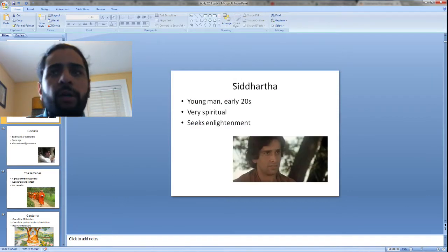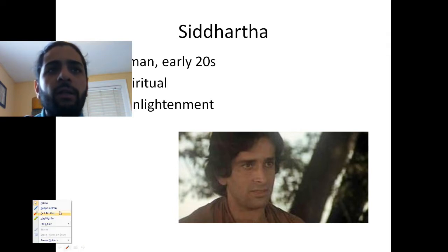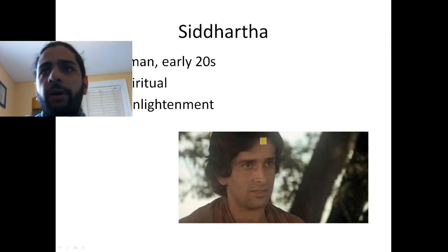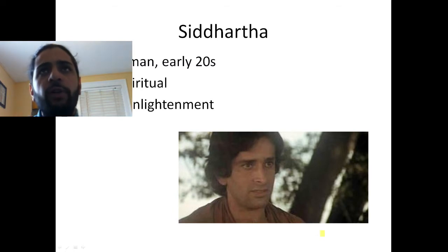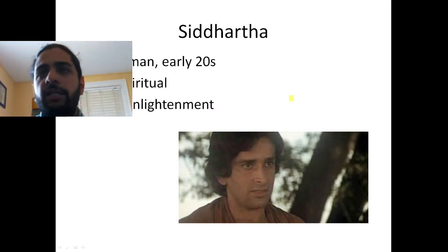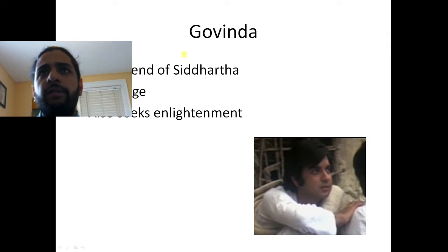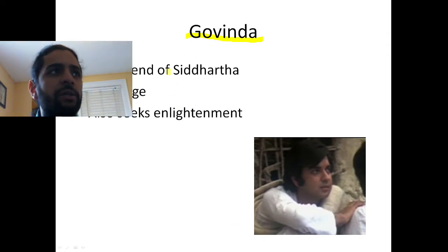Moving on to talk about some of these specific characters. Here is Siddhartha — these pictures are screenshots from the 1973 Conrad Brooks film — my attempt to give you a visual for what these characters look like. Siddhartha is a young man, a very spiritual man, seeking enlightenment. And here is his friend Govinda, the best friend of Siddhartha, similar age, also seeking that sense of enlightenment.